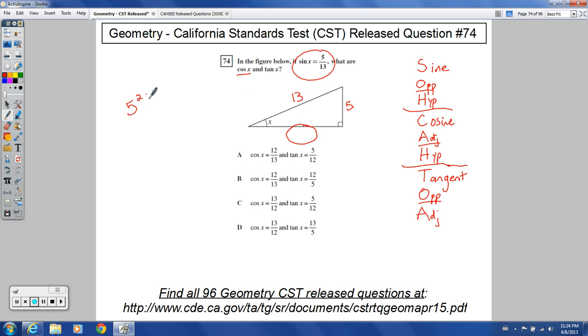So I can say that 5 squared plus, I'll call this x, well, let me not call it x because I already have an x right there. Let's call this y for now. So we'll say that side is y. So I have 5 squared plus y squared, leg squared plus leg squared, equals 13 squared, the hypotenuse squared.